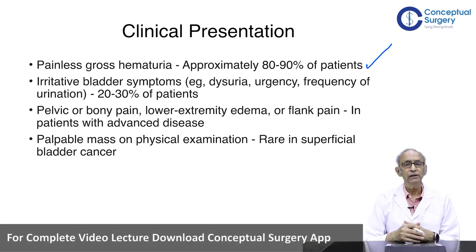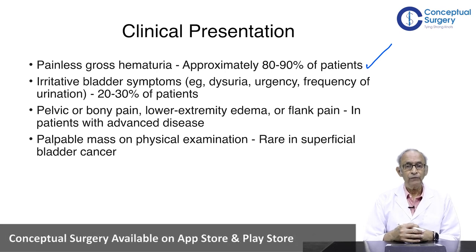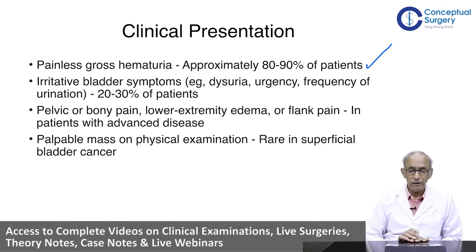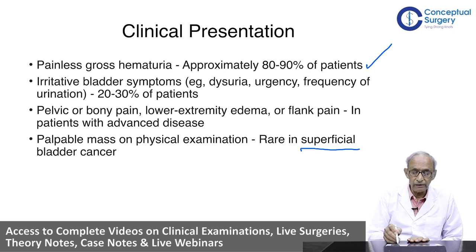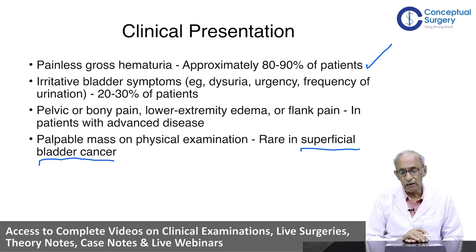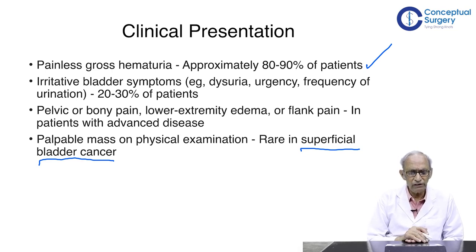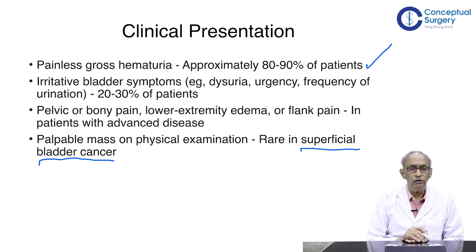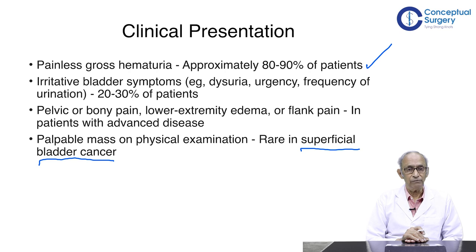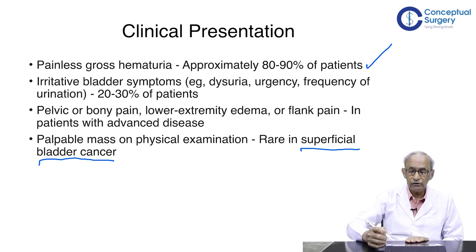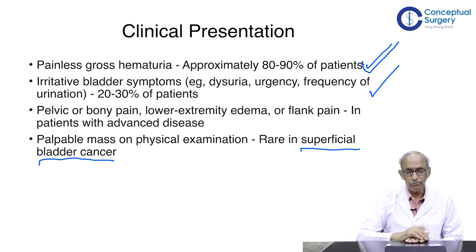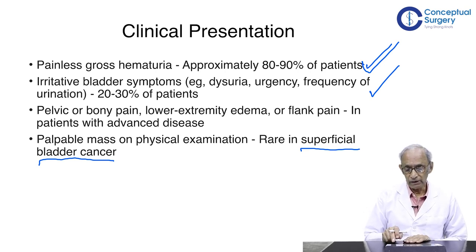There can also be flank pain in advanced disease. A palpable mass on physical examination is rare and definitely not seen in superficial bladder cancer. When a mass is present it is usually due to a large clot in the bladder or some form of retention. To summarize, gross hematuria and irritative symptoms are the important clinical presentations to remember.